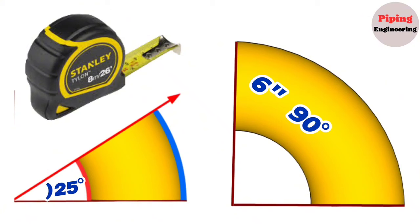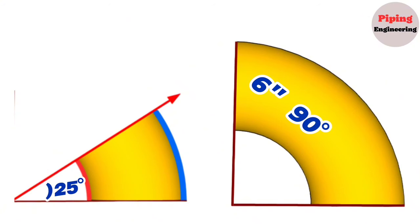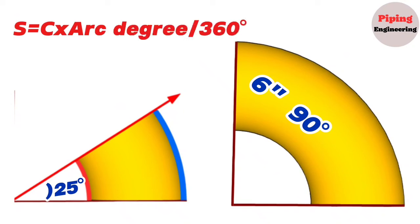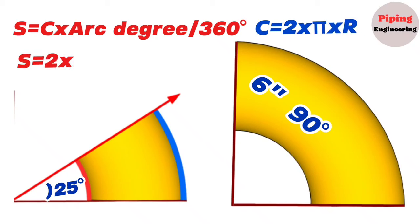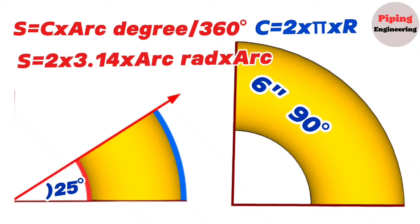Before learning the cutting formula, let's learn the arc length formula. The arc length S equals circumference C multiplied by arc degree A divided by 360 degrees. Since C equals 2πR, the formula becomes: S equals 2 × 3.14 × arc radius × arc degree ÷ 360. Simplifying: 2 × 3.14 ÷ 360 equals 0.01744, so S equals 0.01744 × radius × arc degree.